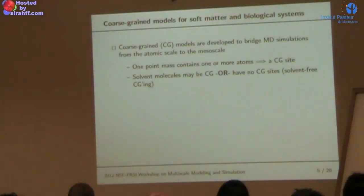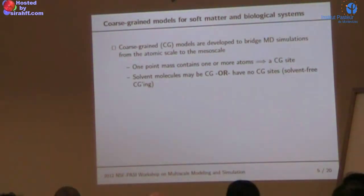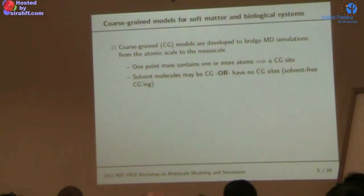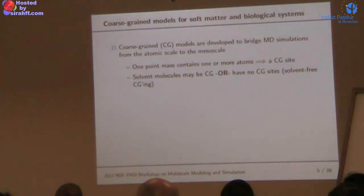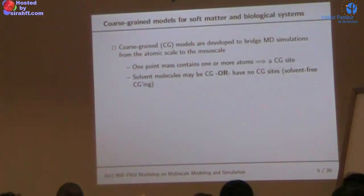When it comes to solvent, solvation effects are very important in soft matter and biological systems. In coarse-grained models, you'll see solvent handled two ways: one is that solvent itself may be coarse-grained, giving a coarse-grained model for water or another solvent species. Or the solvent may have no coarse-grained sites — what we call solvent-free coarse-graining, also referred to as explicit solvent or implicit solvent coarse-grained models.